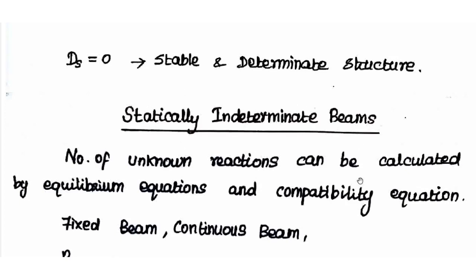When the unknown process cannot be calculated using equilibrium equations alone, we use compatibility equations. The extra equations are called redundancy — redundancy means excess. The unknown reactions are calculated using both equilibrium equations and compatibility equations. This relates to static indeterminacy and kinematic indeterminacy.